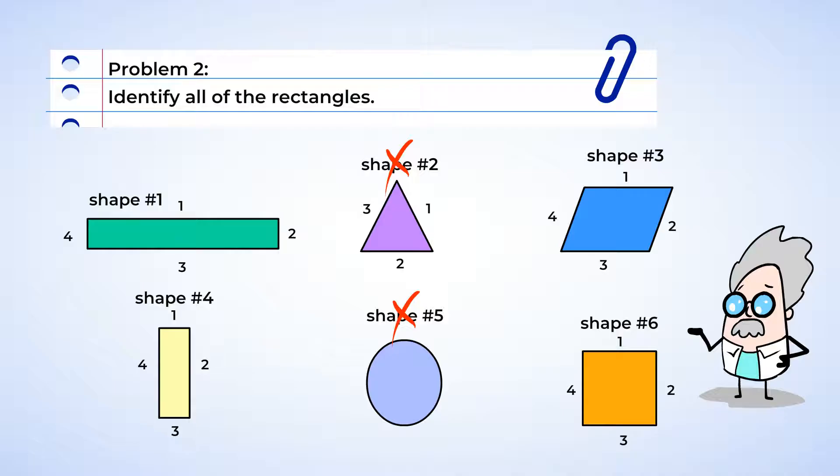Now we also know that rectangles have those 90 degree angles called right angles. Now shape 1 has four right angles. Shape 3 does not have those right angle corners. Cross it off. Shape 4 looks a lot like shape 1 and also has right angles.